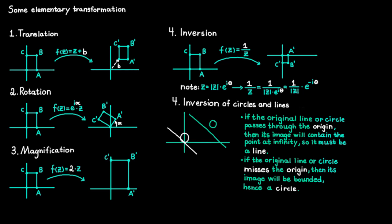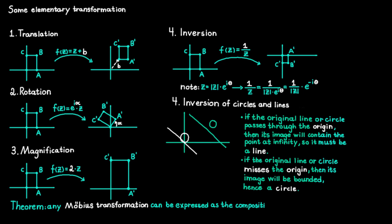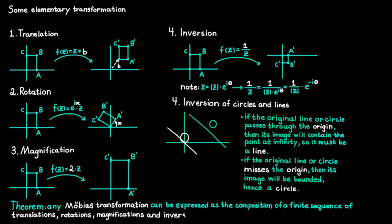The key difference between these two cases is not that one is a circle and the other is a line. Instead, the key difference is whether or not the figure passes through the origin. Inversion works such that if the original line or circle passes through the origin, its image will contain the point at infinity — since we get 1 divided by 0 at this point — so the image must be a line. But if the original line or circle misses the origin, its image will be bounded, hence it must be a circle. Any Möbius transformation can be expressed as the composition of a finite sequence of translations, rotations, magnifications and inversions.